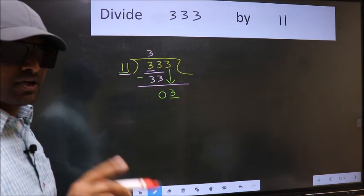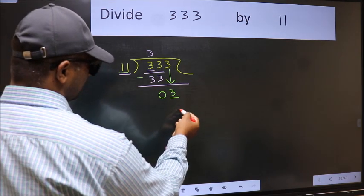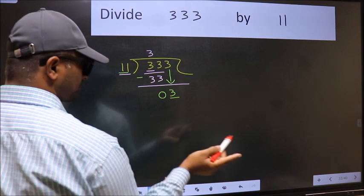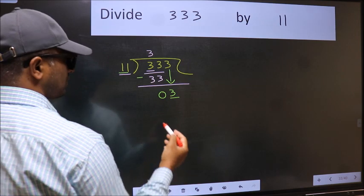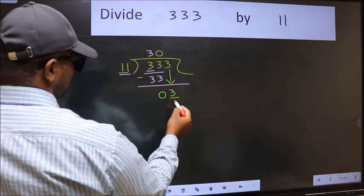Instead, what you should do is ask which number should we take here? If I take 1, we get 11. But 11 is larger than 3, so we should take 0. So 11 times 0 is 0.